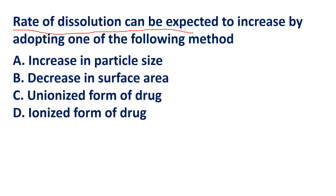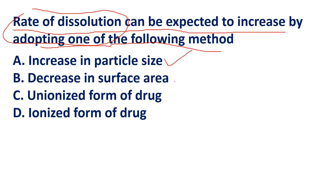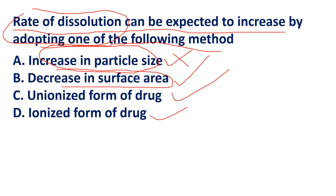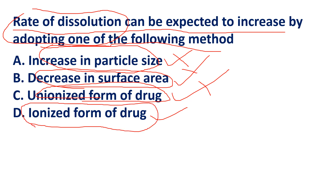Question repeated: Rate of dissolution can be expected to increase by which method? Options: increase in particle size, decrease in surface area, unionized form of drug, ionized form of drug. Increasing particle size reduces surface area and dissolution rate. Decreasing surface area reduces solvent-solid contact. Unionized form is less soluble compared to ionized form. We know acidic drugs are given as basic salts and basic drugs as acidic salts. The answer is B — ionized form of drug.